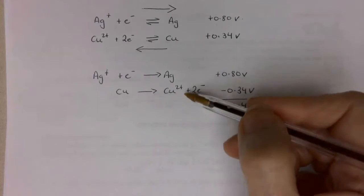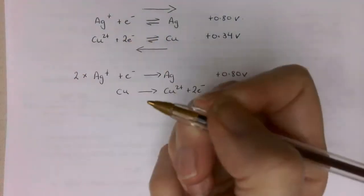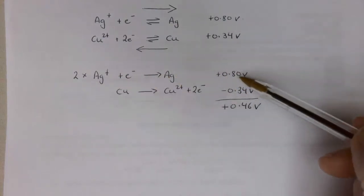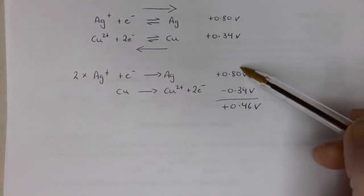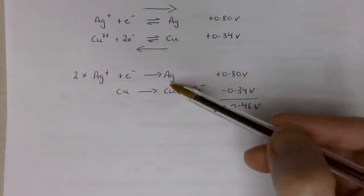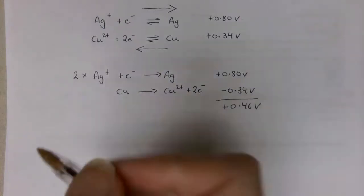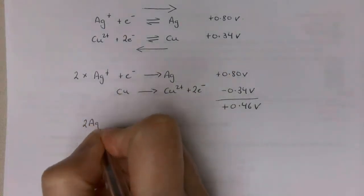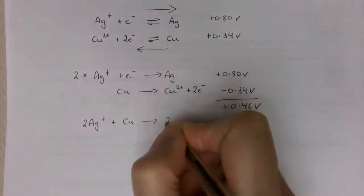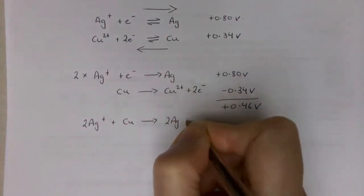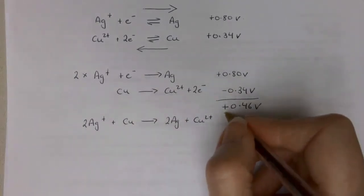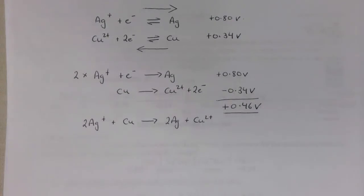Putting the two equations together — remember to multiply the top one by two — notice that multiplying by two does not change the E-cell number. So we have: 2Ag⁺ + Cu → 2Ag + Cu²⁺, and that reaction would generate 0.46 volts.